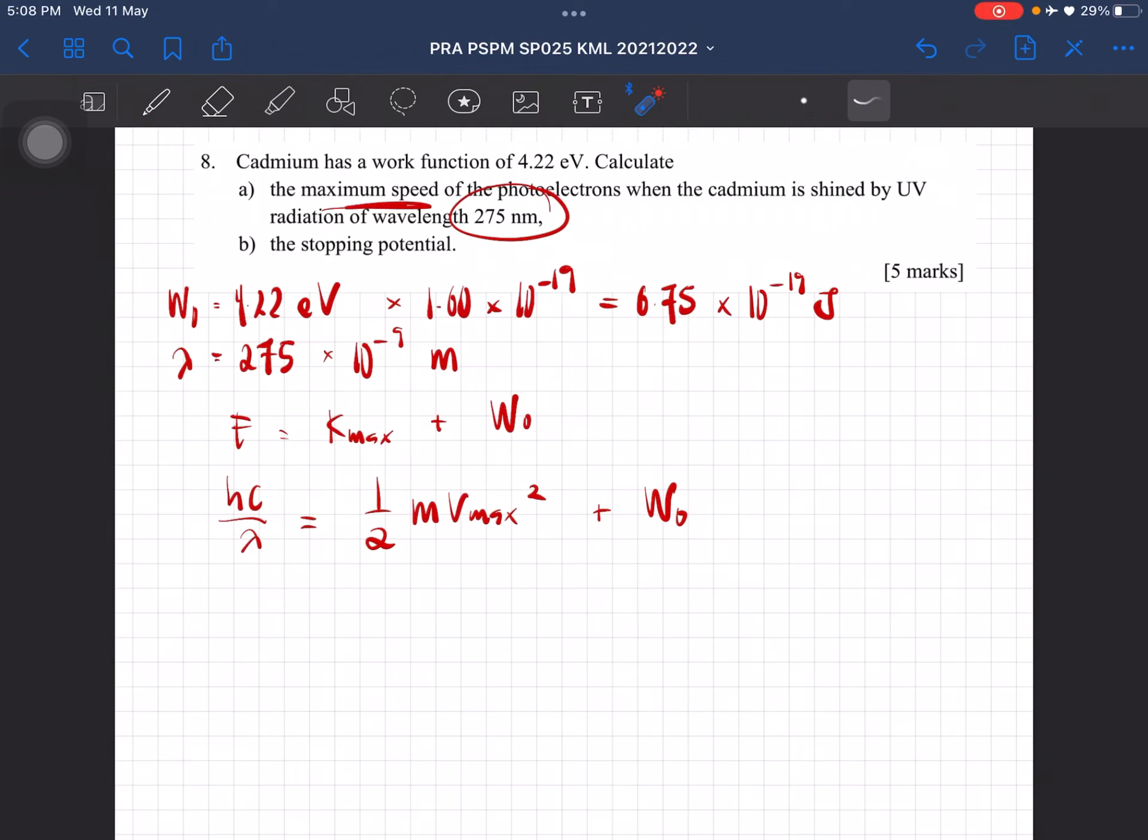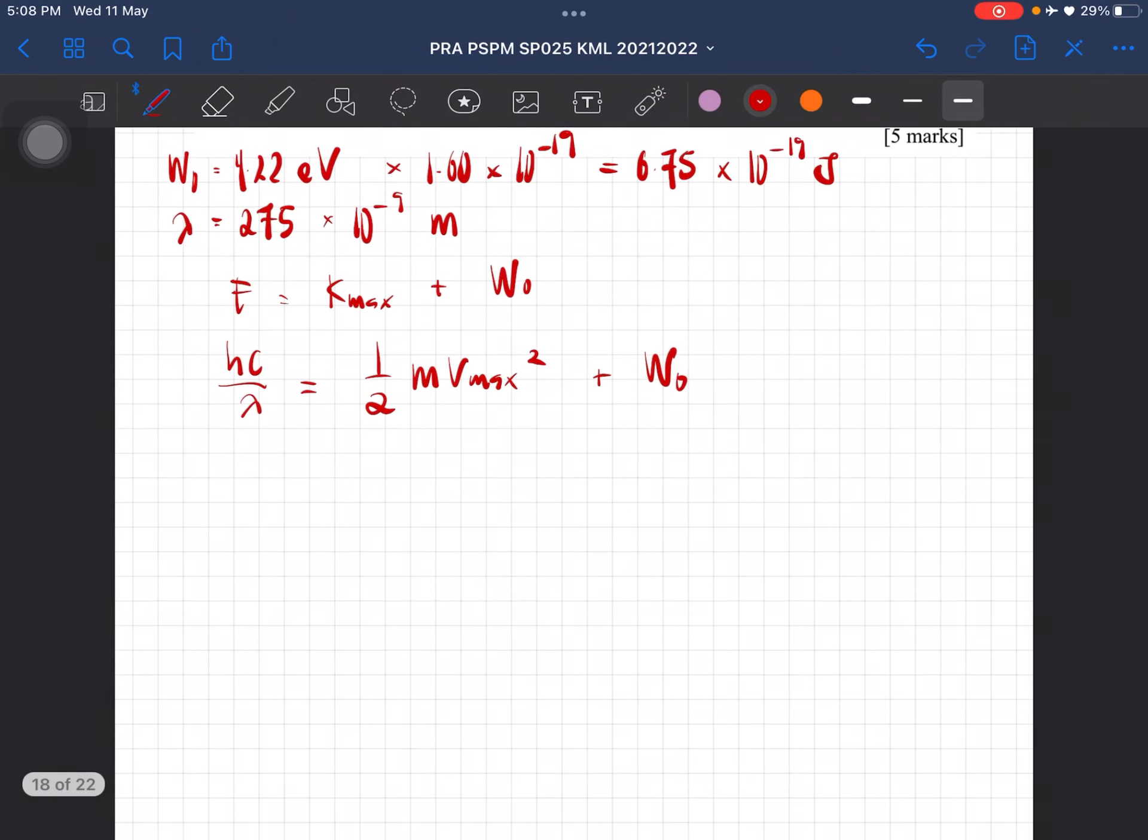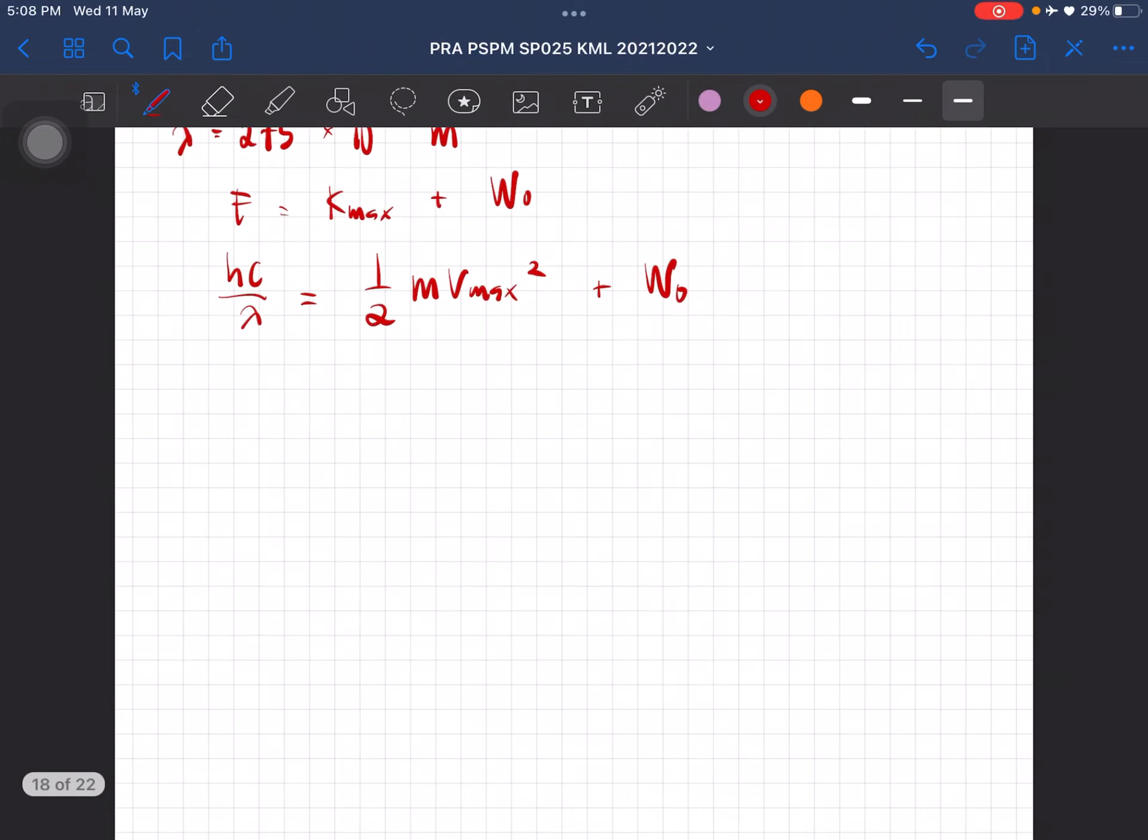So, from here, this is where we get the maximum speed of the photoelectrons. You just have to rearrange and substitute all the values, so you will get the maximum speed to be equal to 3.25 times 10^5 meter per second. So that is the speed.